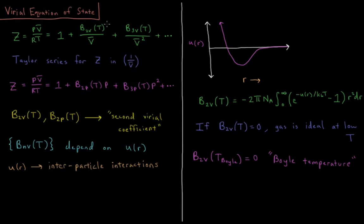All right, so if we know all these virial coefficients, we can calculate the compressibility factor, and then we know pressure, molar volume, and temperature. So where do these virial coefficients come from?